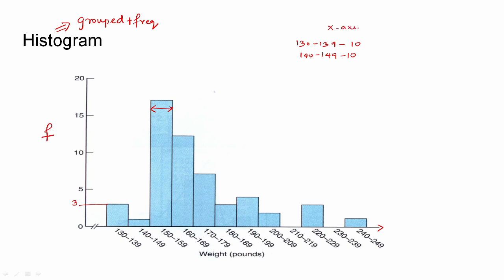That's why the y-axis goes 0 to 5, 5 to 10, 10 to 15. So the x-axis and y-axis frequency width is constant — 5 to 10, 10 to 15, so width is constant. There is a break: there is a 0 and there is a break. So if we start the data at 130, then the break is done.